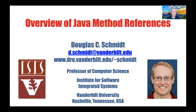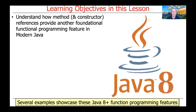Now that we've given an overview of Java Lambda expressions, let's turn our attention to Java method references. In this part of the lesson, we'll describe how method and constructor references provide another foundational programming feature in modern Java. We'll do this by taking a look at several examples that showcase these features, which came out first in Java 8 and then have been expanded on in later versions of Java.